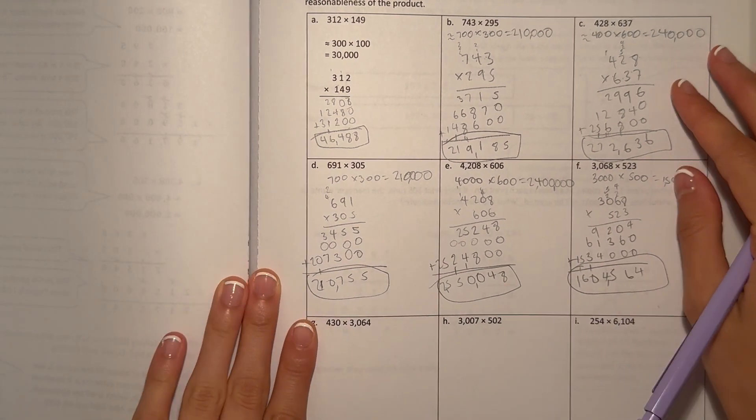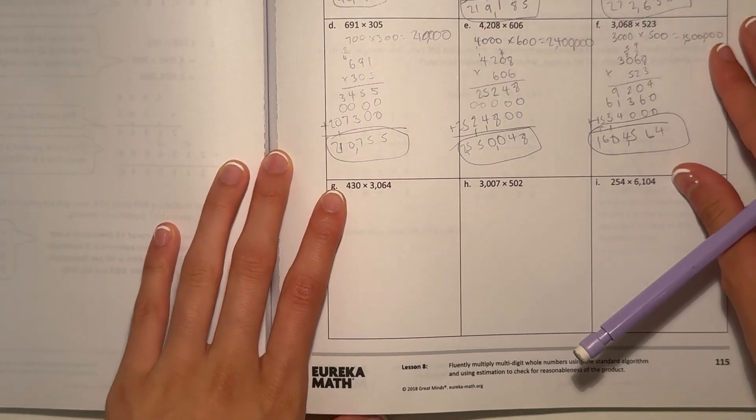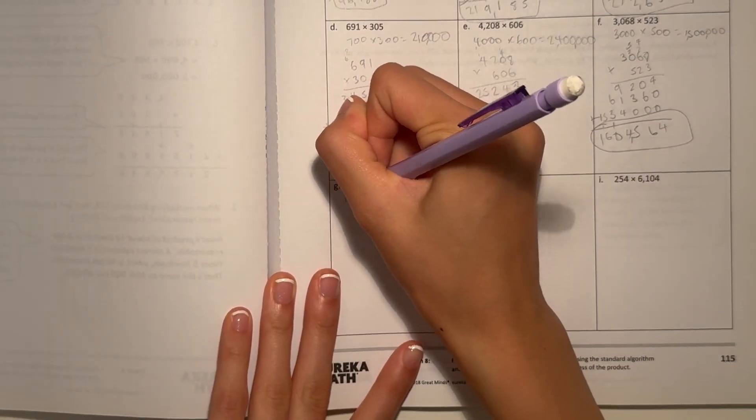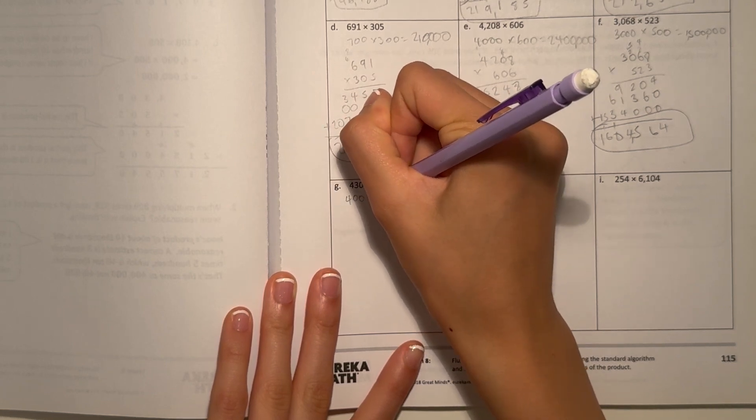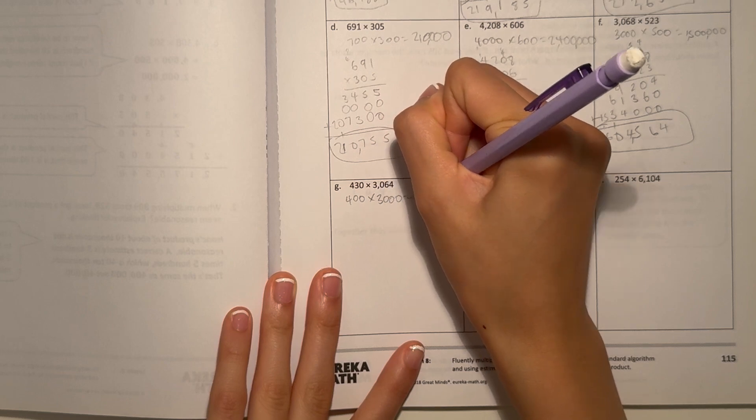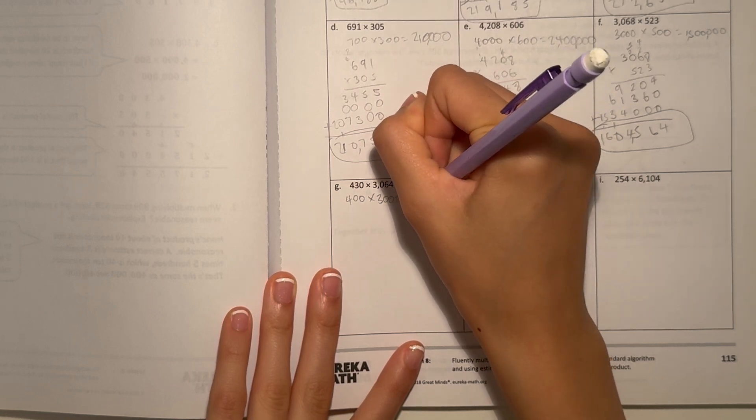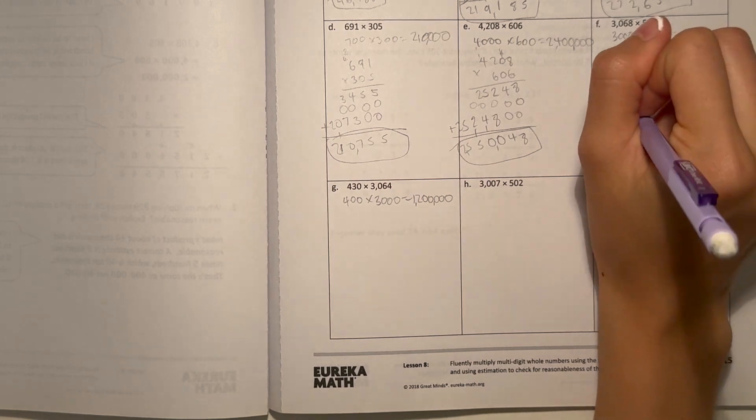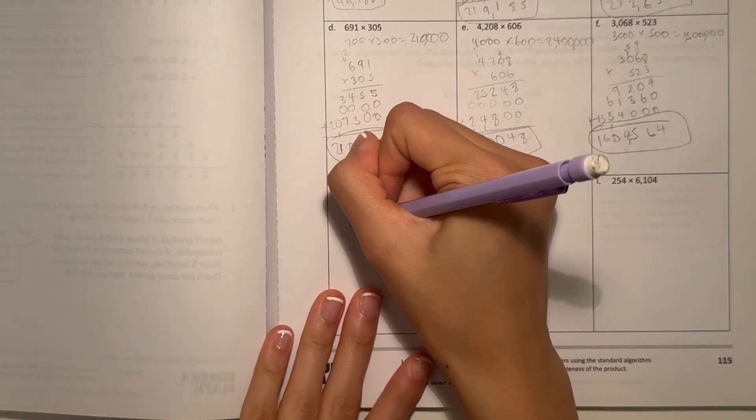G. 430, I'll round it 400, times 3,064, that's 3,000. 4 times 3 is 12. And now add the zeros. Our estimate is 1,200,000. Now let's actually do the math.